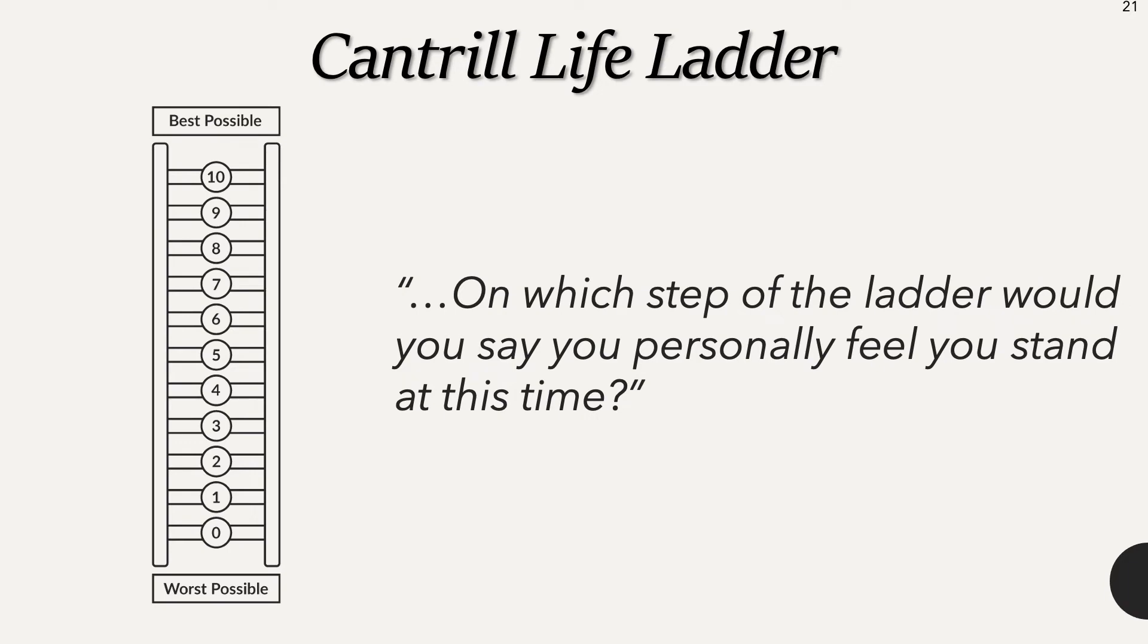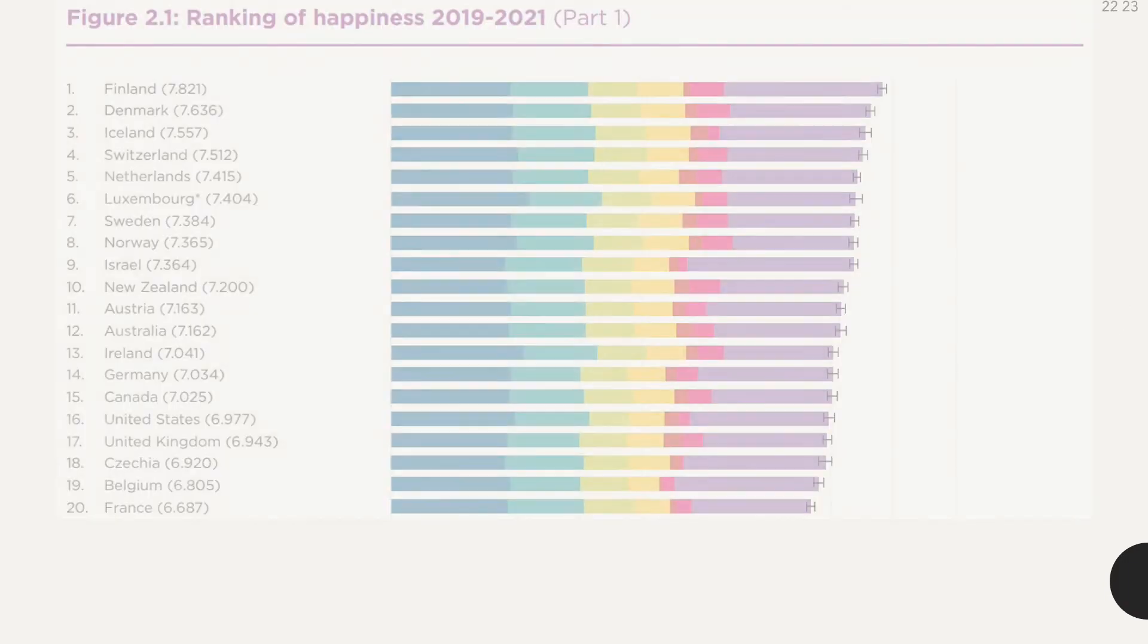Here are the most recent rankings. I listed the top 20 countries here in order to show the United States ranking of 16th. The colored bars represent different variables used to help give a rough explanation of the variations in happiness across countries.